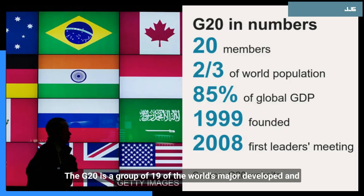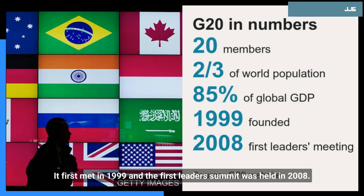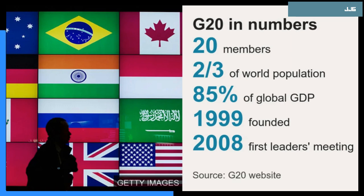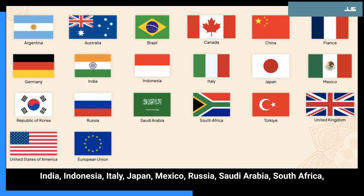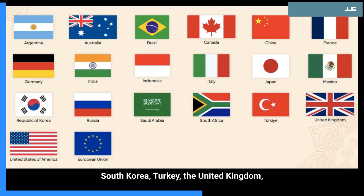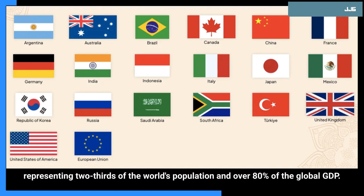Chapter 2: The G20 First Meeting and Structure. The G20 is a group of 19 of the world's major developed and emerging economies, plus the European Union. It first met in 1999, and the first leaders' summit was held in 2008. The G20 consists of Argentina, Australia, Brazil, Canada, China, France, Germany, India, Indonesia, Italy, Japan, Mexico, Russia, Saudi Arabia, South Africa, South Korea, Turkey, the United Kingdom, the United States, and the European Union.